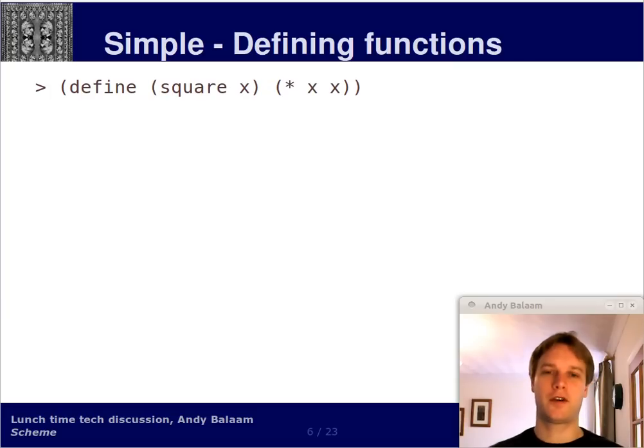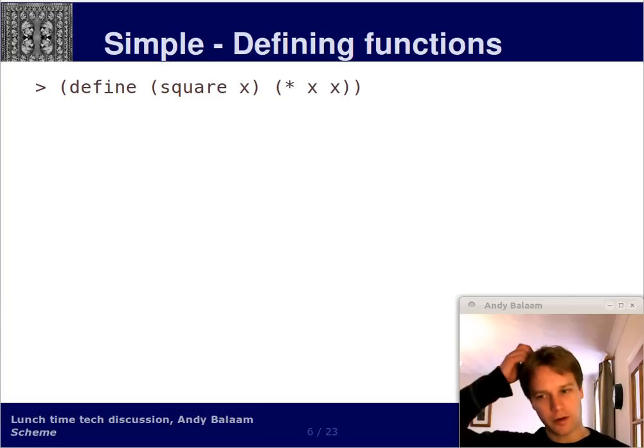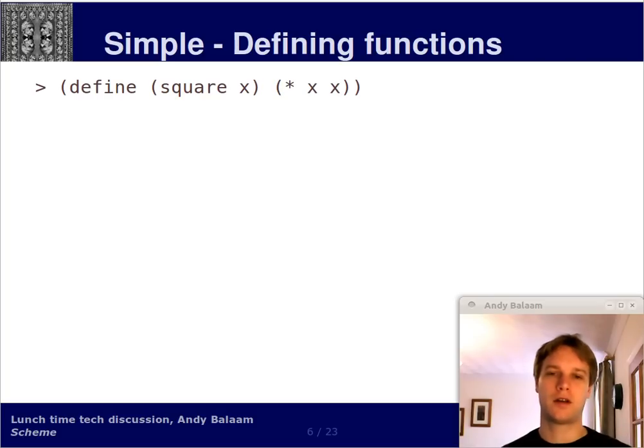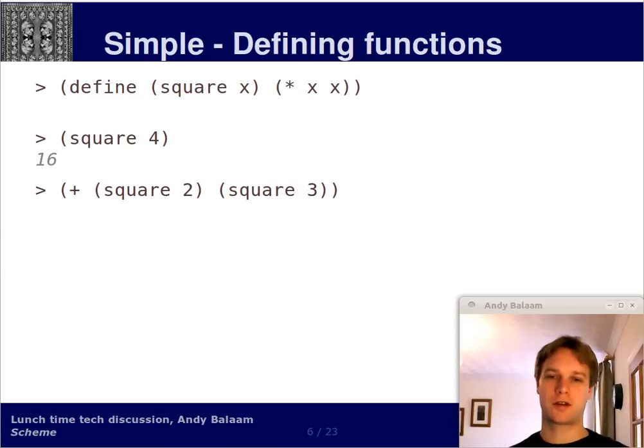Other things we can do. We can define functions. This is the way you define a function. So notice everything is open bracket, something, something, something, close bracket. So here, open bracket, define. And then the thing after the define is another bracketed expression rather than just a symbol on its own. So that means this is a function. The function is called square and it takes one argument called x. And the body of that function is immediately after that. And it's just the value of multiplying x by x. So if we ask what the square of four is, we get what we would expect, 16. We can also use these in compound expressions so we can add up these two squares and get back the correct answer.